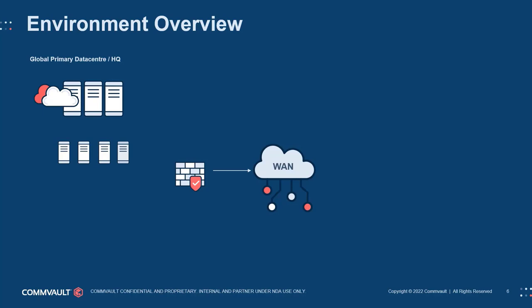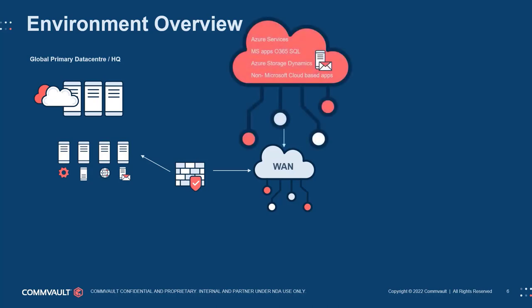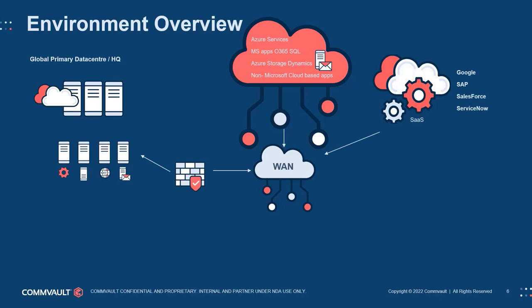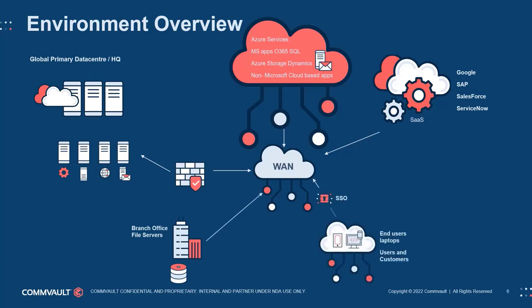At this point, it is worthwhile to understand what type of data center services need protecting at the site — for example, databases and applications including custom applications, file servers including NAS, ERP, CRM, web applications, mainframes, and so on. The customer then describes their other sites, and you can begin to see the bigger picture. The customer is using some Microsoft O365 applications in Azure, in addition to hosting some of their own custom applications as Azure VMs. They also have a number of SaaS applications outside of Azure, a remote branch office hosting some local file services, a number of employees and customers who work remotely and access services remotely, and finally a secondary data center used for disaster recovery of the main HQ.